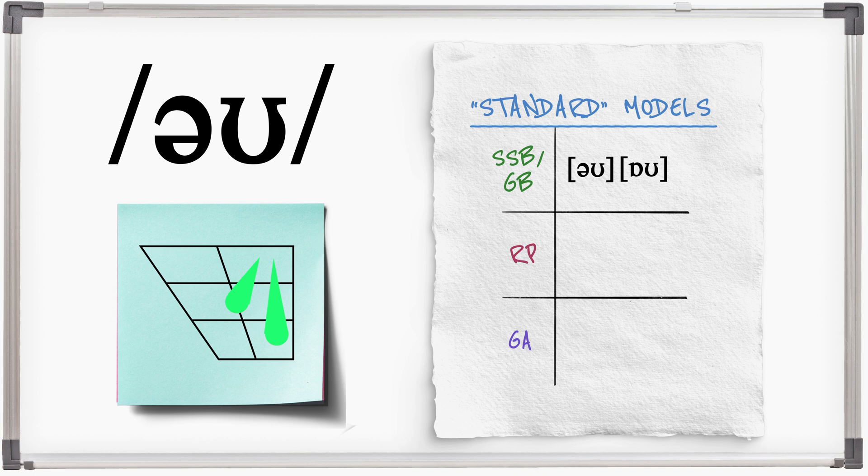In RP, O starts centrally or slightly front. O, don't go. And this same position is used before L, sold, gold.